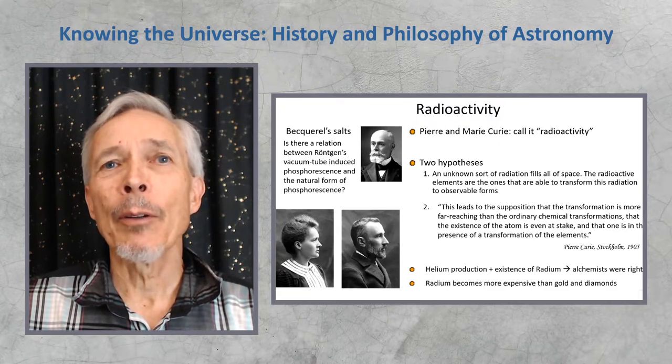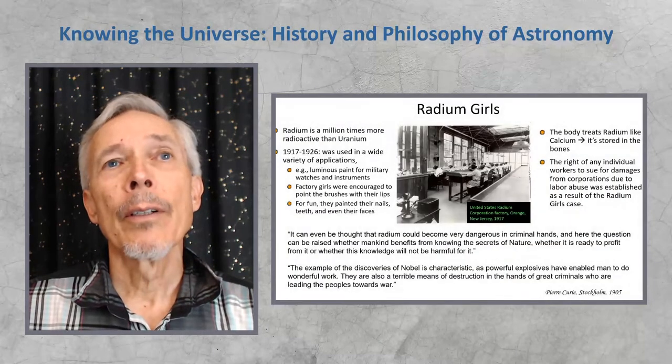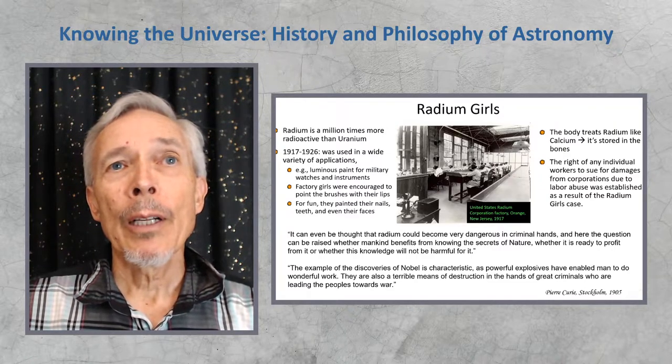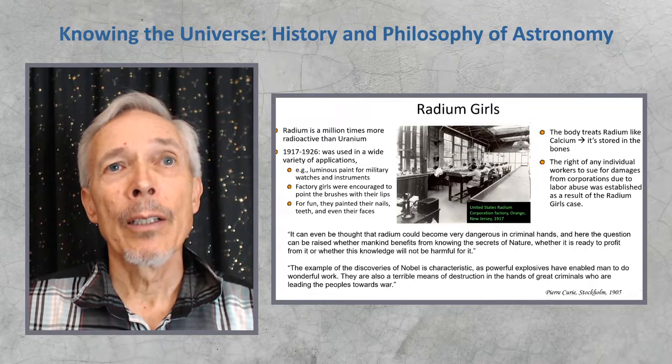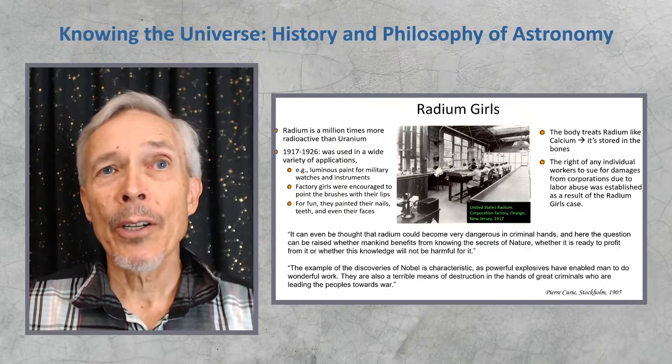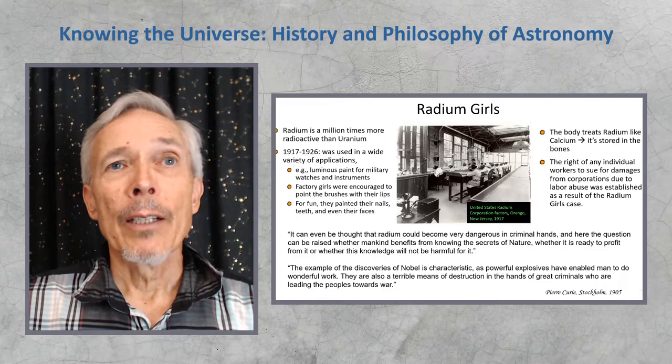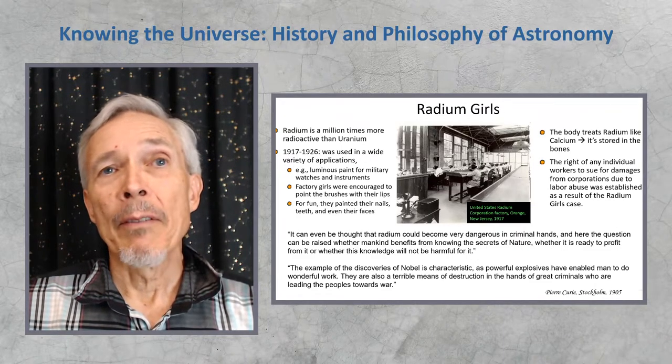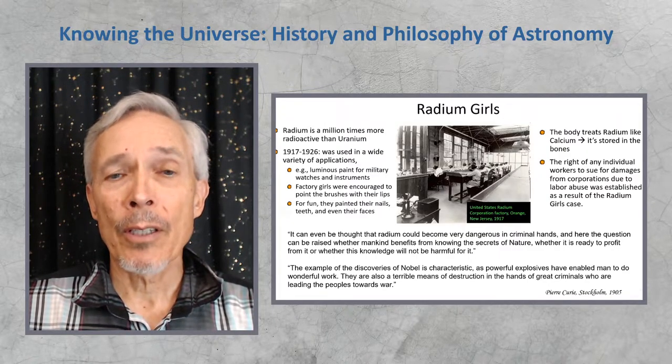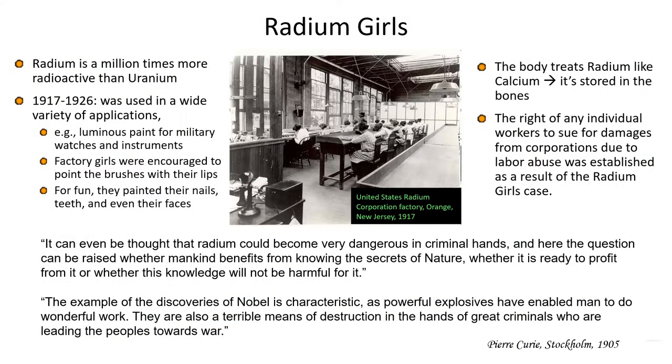Radium became a highly sought-after item in the field of science, more expensive than gold or diamonds. And, moving it into the world of the popular culture, it was valuable and used in a variety of applications in the early 20th century. Luminous paint for military watches and instruments. Factory girls were encouraged to point the brushes with their lips when they were using it to apply to tools and other items. For fun, they even painted their nails, teeth, and their faces. Unfortunately, the body treats radium just like it does calcium. It's stored in the bones. And, because of this sad time, the radium girls, as they were called, many died years later from cancers as a result of the radioactivity. The right of any individual worker to sue for damages from corporations due to labor abuse was established as a result of the radium girls' case.